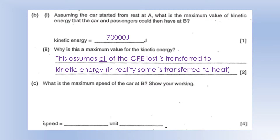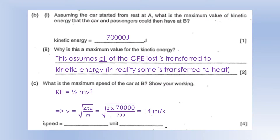What's the maximum speed of the car at B? Kinetic energy is half mv squared. We rearrange that to get the square root of 2KE over m. Plugging the numbers in, we get the speed is 14 metres per second.